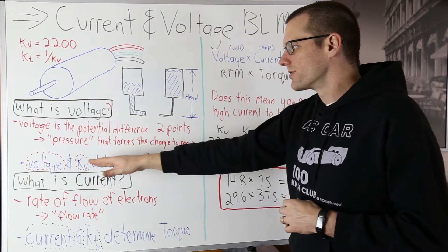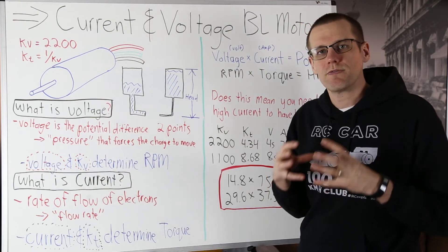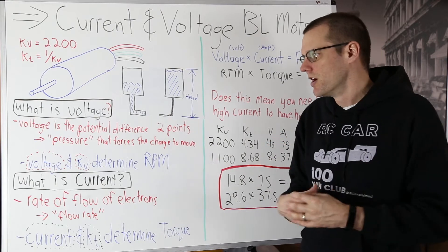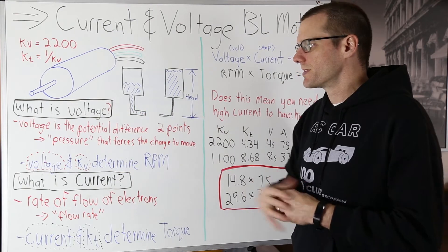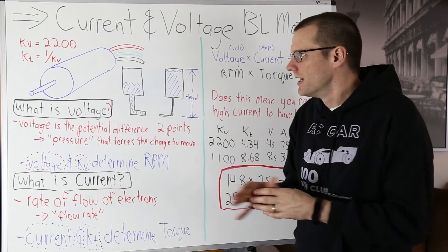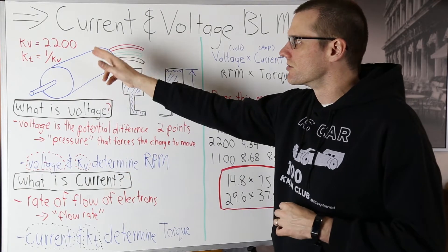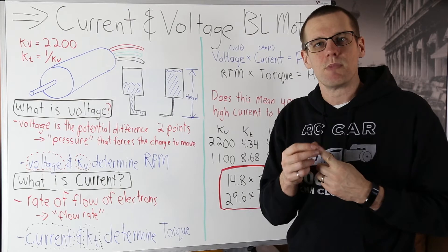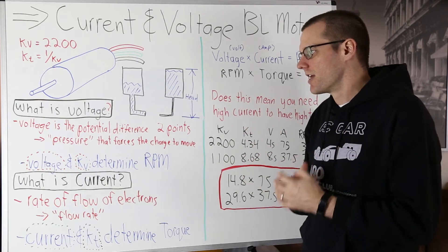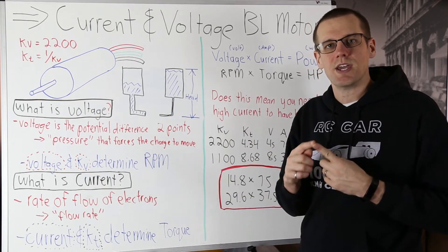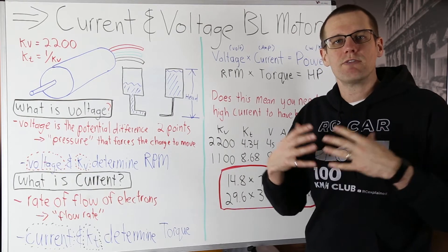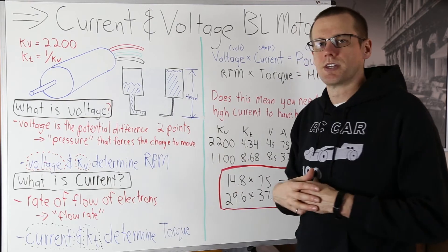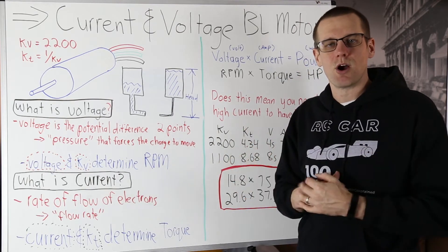When we look at voltage as well as kV, both of those values are important to determine the RPM of our brushless motor. Voltage as we know is the potential difference, however kV is actually a parameter that comes directly from our motor. It's a motor constant. It's one of the multiple motor constants that we have and kV is how many RPM you get out of that motor for every volt that you apply to it and this is ultimately what determines the total amount of output RPM.